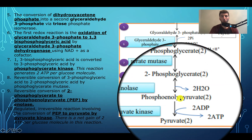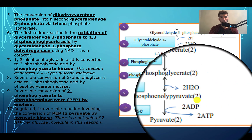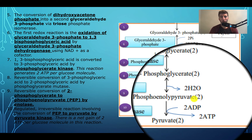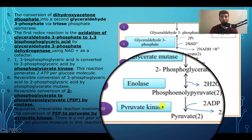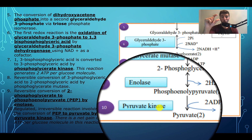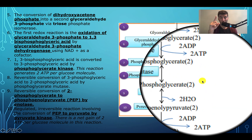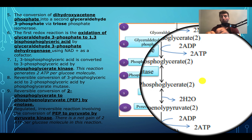Phosphoenolpyruvate, or PEP, is then converted into pyruvate via the enzyme pyruvate kinase. Since it's a kinase, we're dealing with phosphates again, and we're creating the next ATP. Because both ATP-generating steps - phosphoglycerate kinase and pyruvate kinase - are both running in tandem, we're not just creating two ATP but four ATP total. Since we put two ATP in at the beginning and create four, the net output of glycolysis starting with glucose is two ATP.